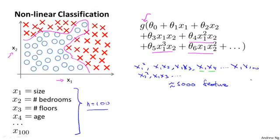And asymptotically, the number of quadratic features grows roughly as order n squared, where n is the number of the original features like x1 through x100 that we had. It is actually closer to n squared over two. Including all the quadratic features doesn't seem like a good idea, because that's a lot of features and you might end up overfitting the training set. And it can also be computationally expensive to be working with that many features.